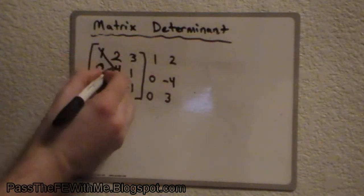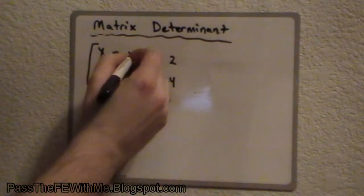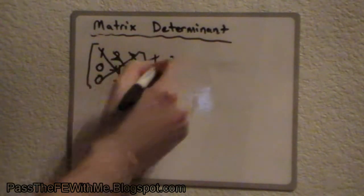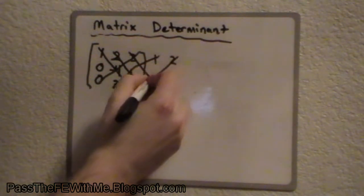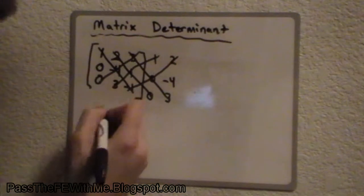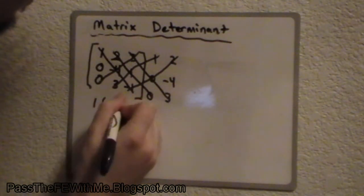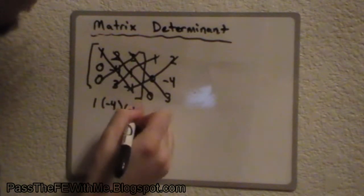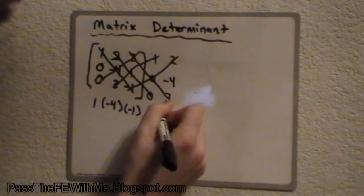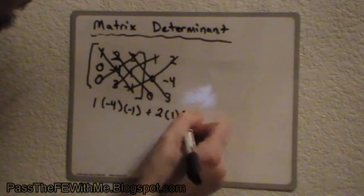So, let's take our lines and go diagonally through. And you can do the same going the other direction. This looks like it's going to be a lot of work, but in this case, it probably won't be. So, we'll start with 1 times negative 4 times negative 1 plus 2 times 1 times 0.